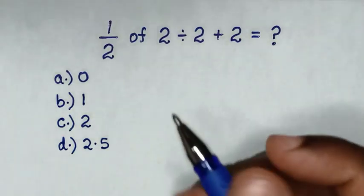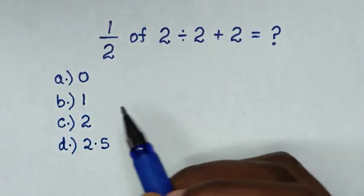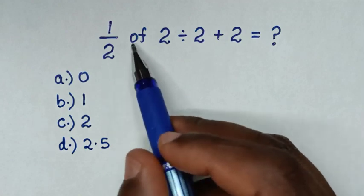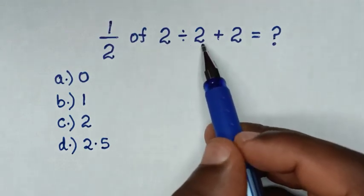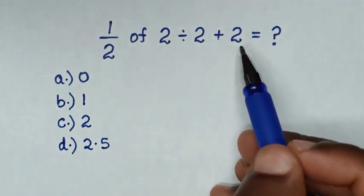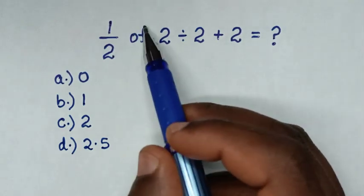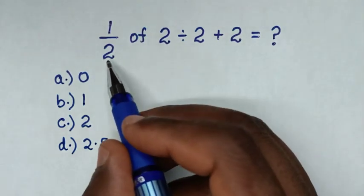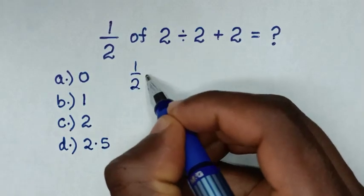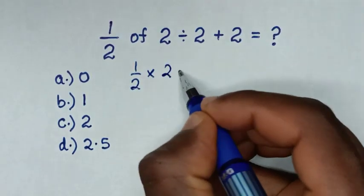Hello, you are welcome to solve this math problem which is a half of 2 divided by 2 plus 2. A half of is the same as multiplication, so it will be a half times 2 divided by 2 plus 2.